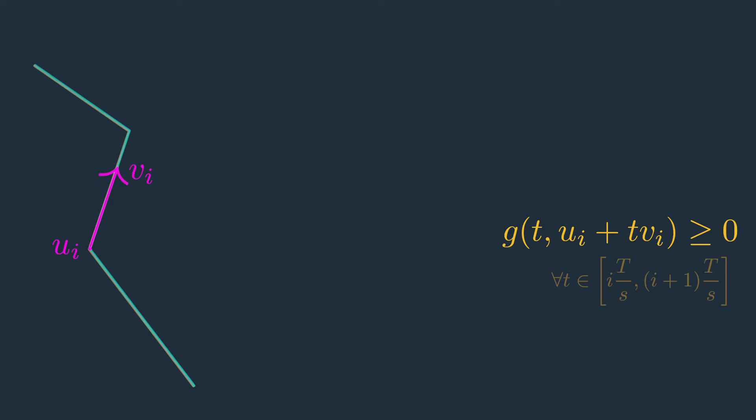The way it works is that instead of optimizing directly over u_i's and v_i's, we introduce a new distribution, let's call it mu, over such u_i's and v_i's. So think of mu as a distribution over feasible paths. You can sample feasible paths from this distribution.